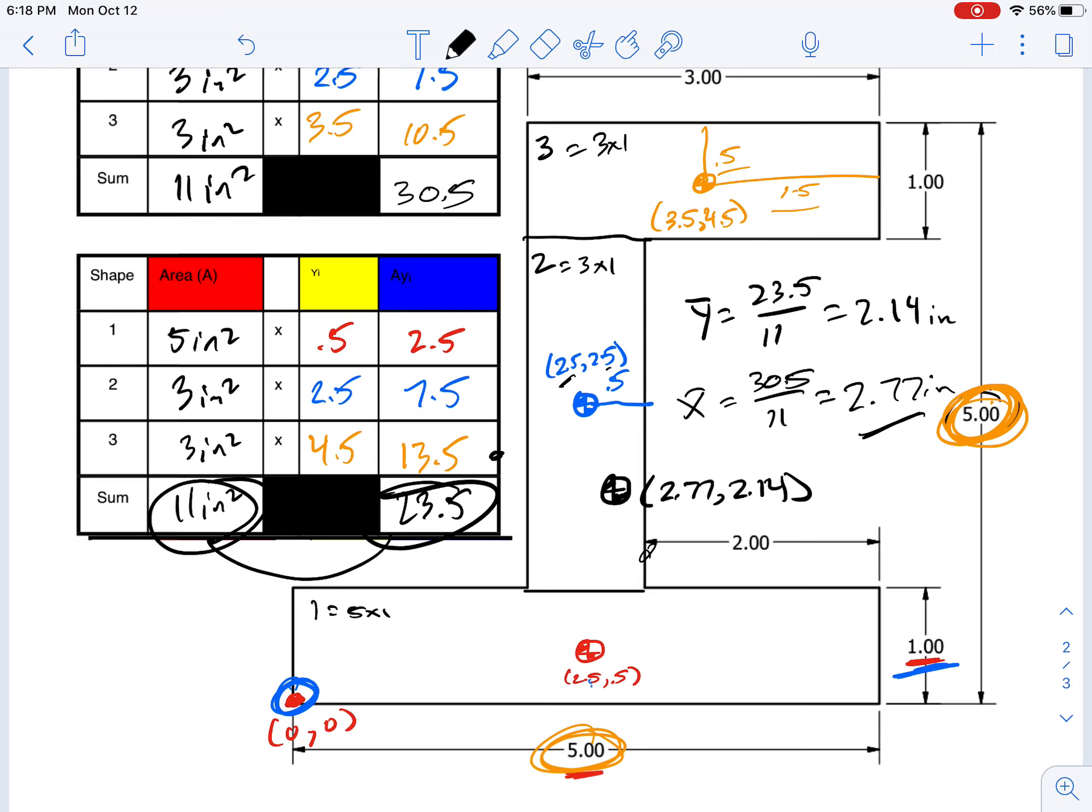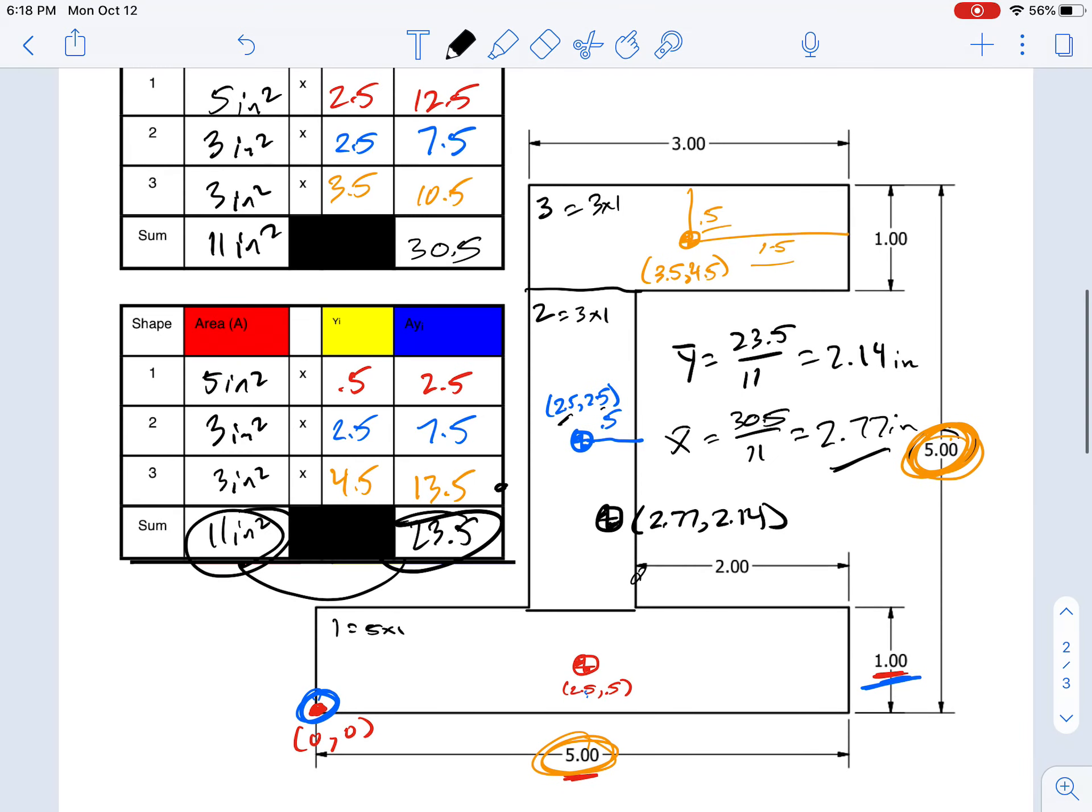And why is it there? Why is it below halfway for the y and to the right of center for x? Well, more of the shape is over to the right because this is not centered up here. And more of the shape is down at the bottom because this is such a wide rectangle down here. That's why it's more to the right and down than the geometric center. That is where our centroid location is for this shape.